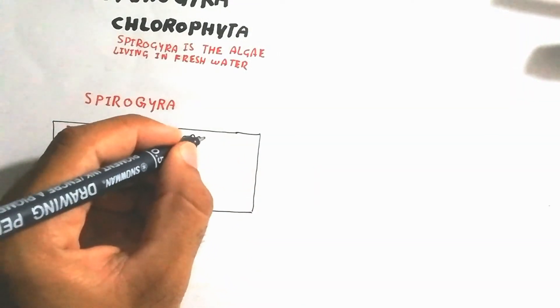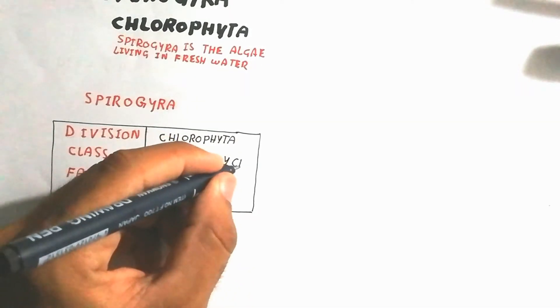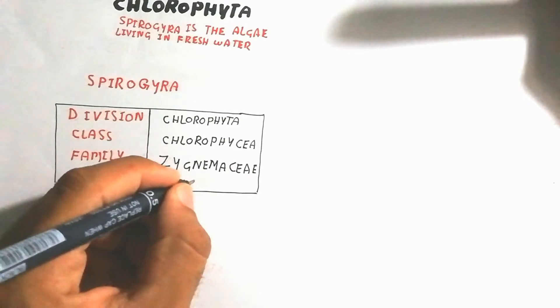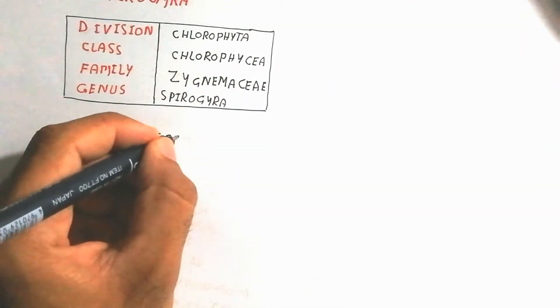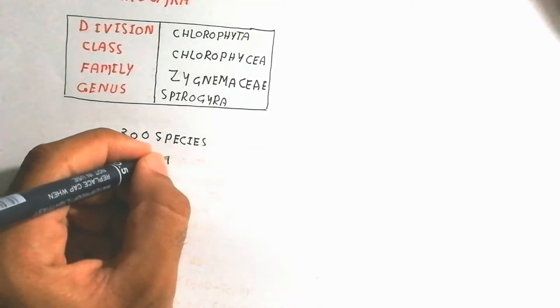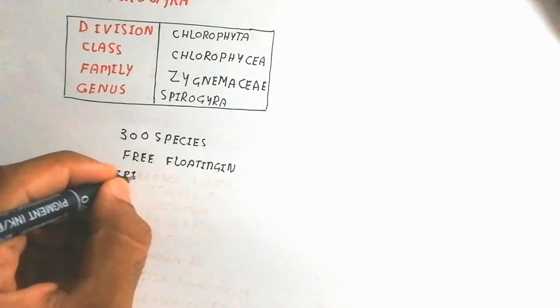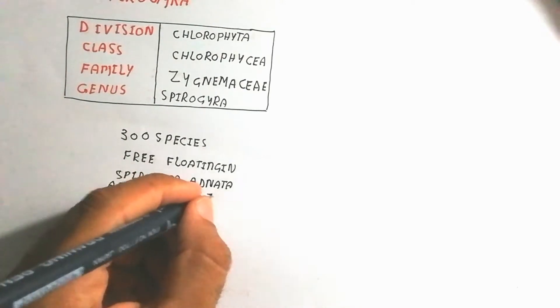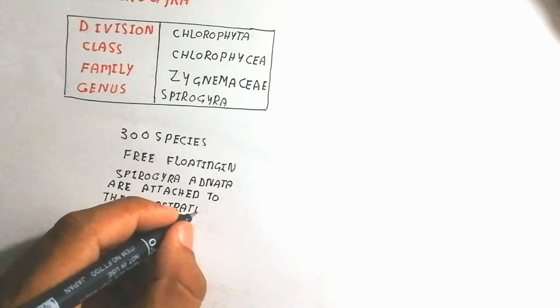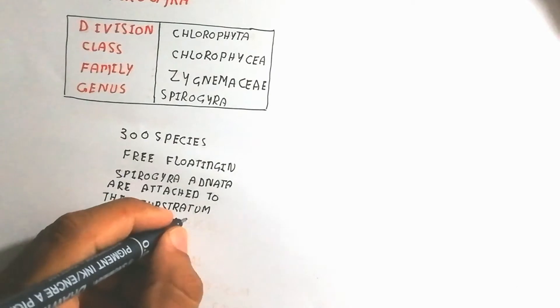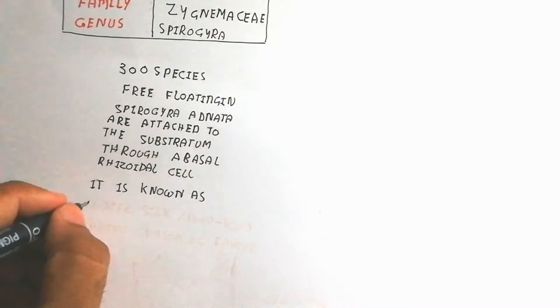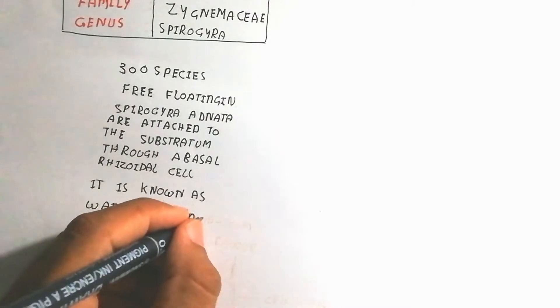The classification of Spirogyra: division Chlorophyta, class Chlorophyceae, family Zygnemataceae, genus Spirogyra. It has a filament-like, thread-like structure with about 300 species. Most are free-floating, but Spirogyra adnata is attached to the substratum through a basal rhizoidal cell. It is also known as water silk or pond scum, and the favorable environment is the spring season.